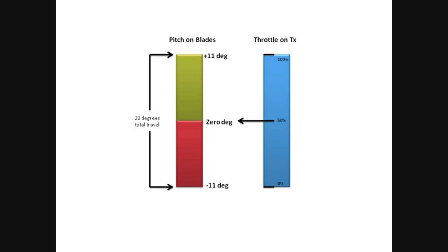So if you imagine the head on a belt CP has a range of 22 degrees travel, if the swash is in the middle then ideally you should have plus 11 degrees and minus 11 degrees, which gives you that 22 degrees total travel.